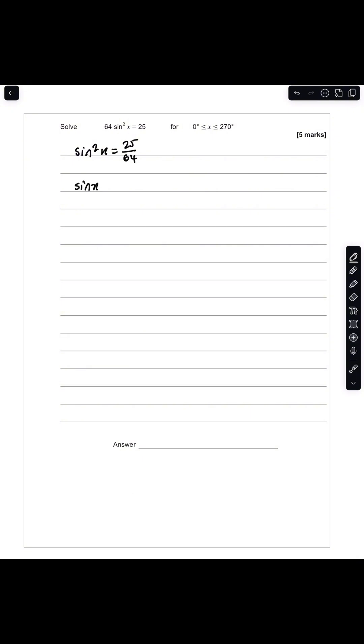Then I'm going to take the square root of both sides, in which case I will have plus or minus 5 over 8. So in this case I have sine x equals 5/8 and sine x equals minus 5/8.